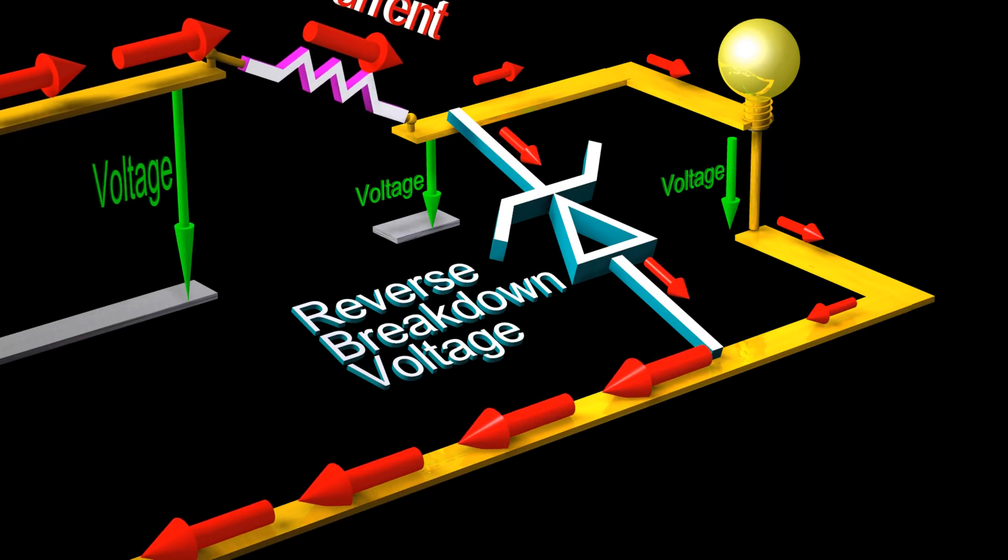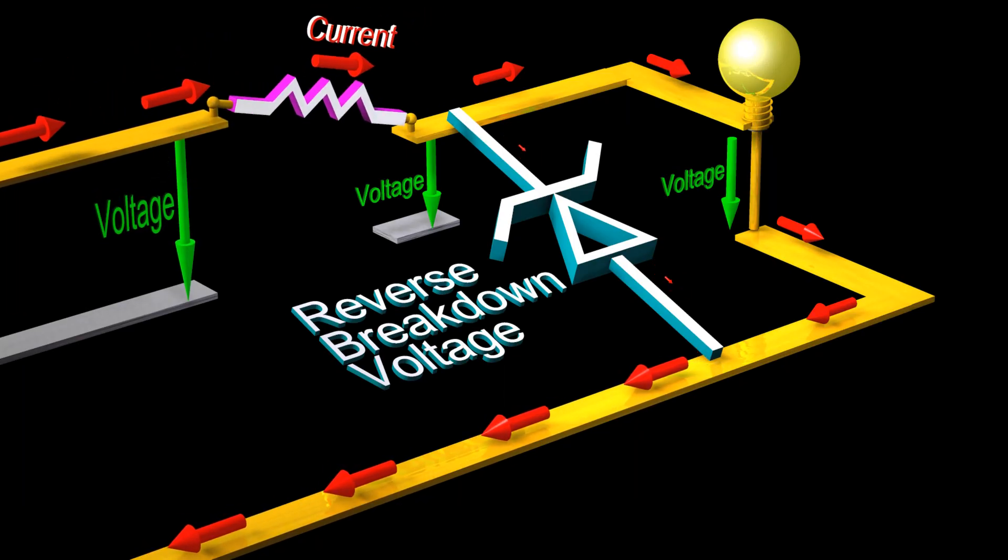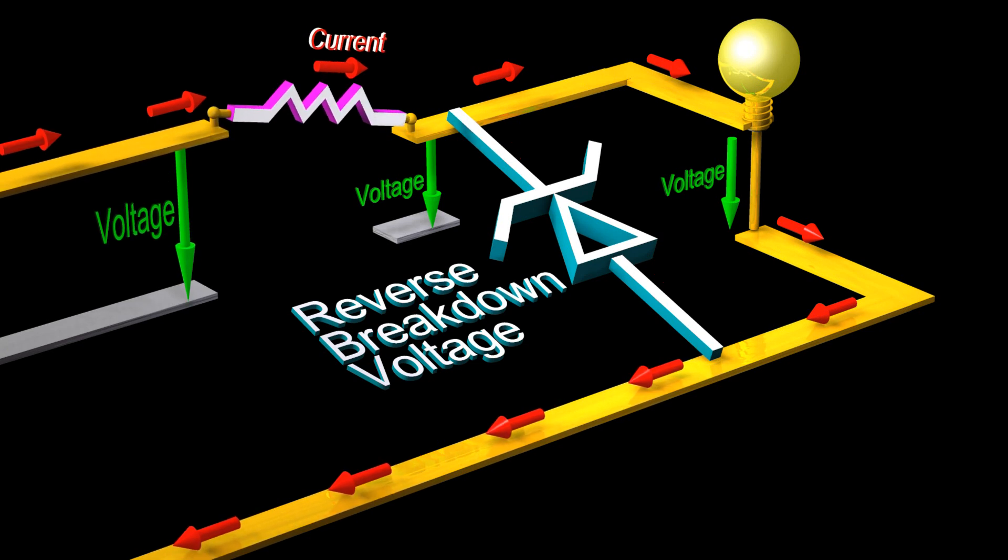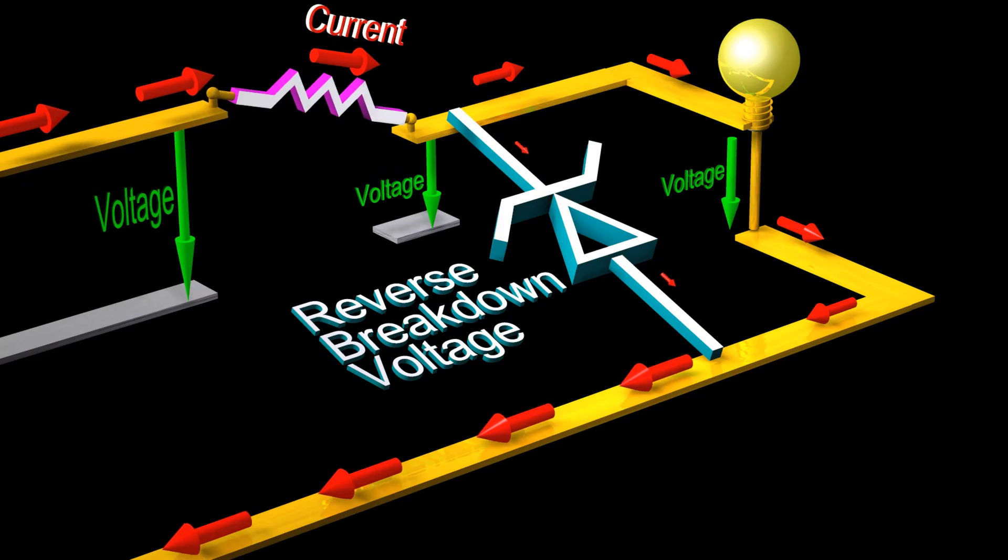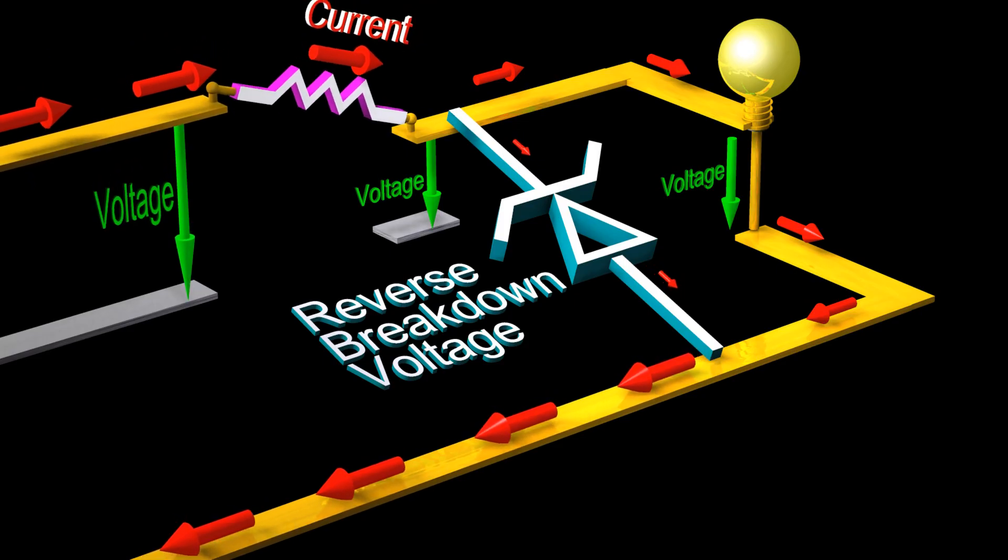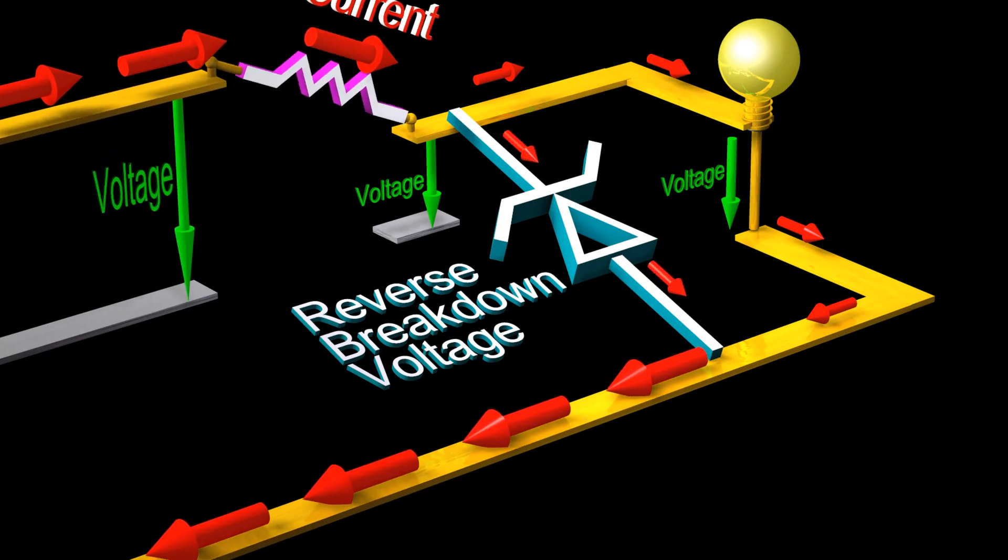If the input voltage is fluctuating but is always higher than the breakdown voltage, then the Zener diode can be used as a voltage regulator, ensuring that the output voltage stays approximately constant.